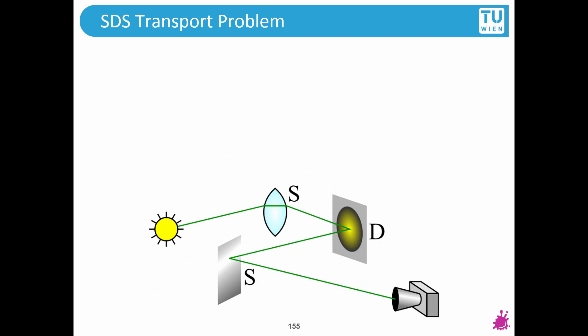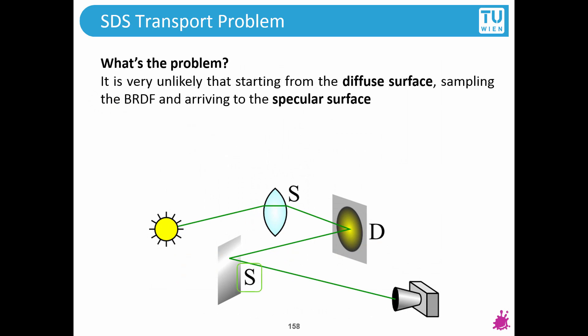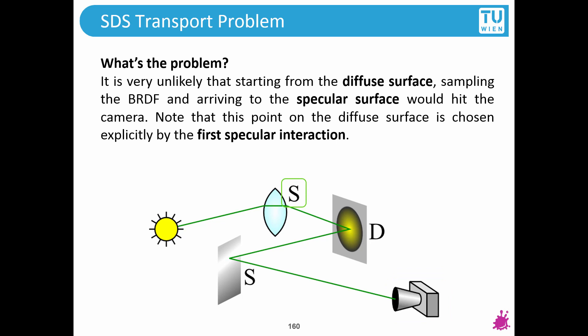So what is exactly the problem here? Imagine that we start out from a diffuse surface, we sample the BRDF, and therefore we arrive to this other specular surface, and off of this specular surface we are supposed to hit the pinhole camera. Also note that this diffuse point on the surface was chosen by a specular interaction before, and it was chosen explicitly.